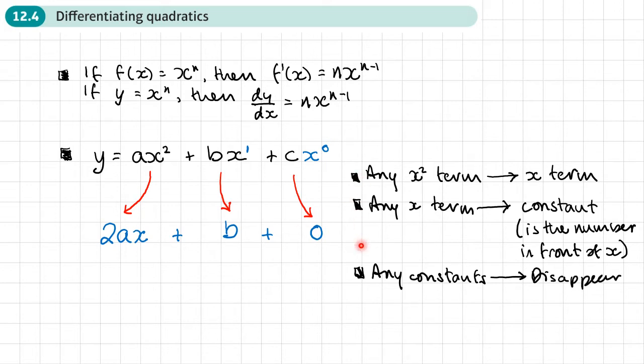And we can use these rules here to quickly differentiate a quadratic. X squared terms become x terms, x terms become constant. And basically it's just a number in front of the x and the constant disappears.